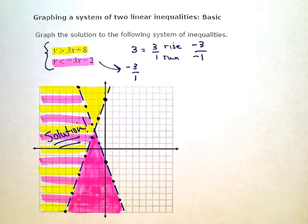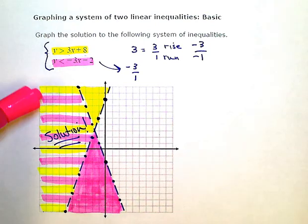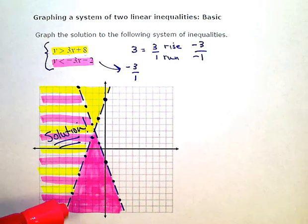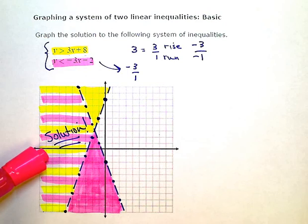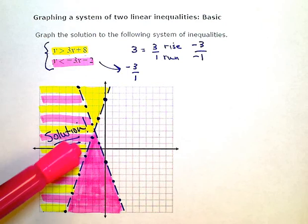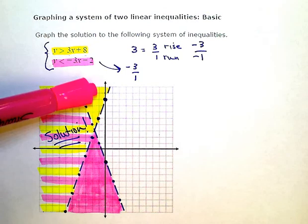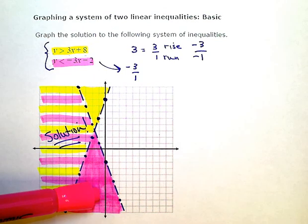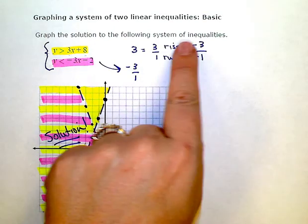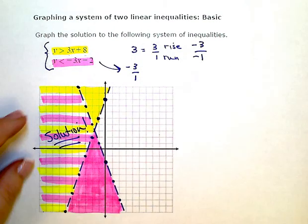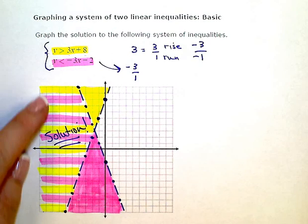When you do these problems in Alex, you're only going to click or shade the portion of the graph that is the solution to the entire system, your overlap, or the part that would have your two colors. Not any regions that are solutions to only one. If we want the solution to the entire system, we're really only interested in the region that's a solution to both.